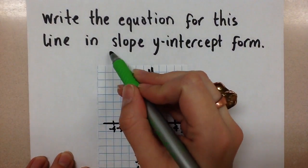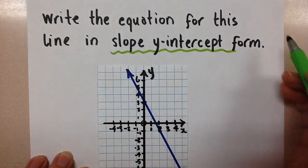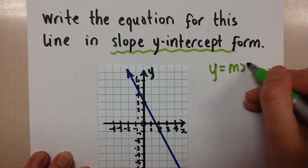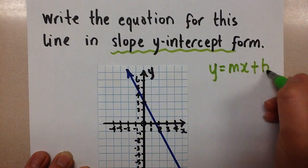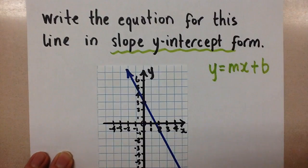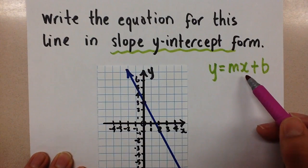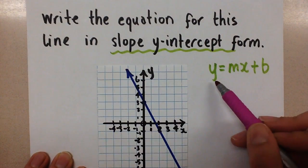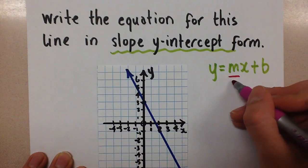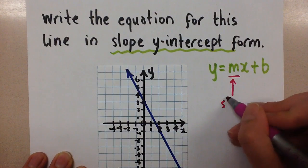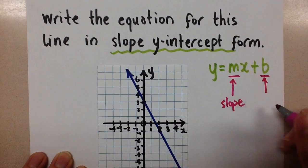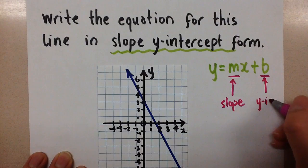So when we say slope y-intercept form, this means the y equals mx plus b form that we all know very well. And in this equation, the x of course is the independent variable and the y is the dependent variable. Now this m is the slope and the b is the y-intercept.